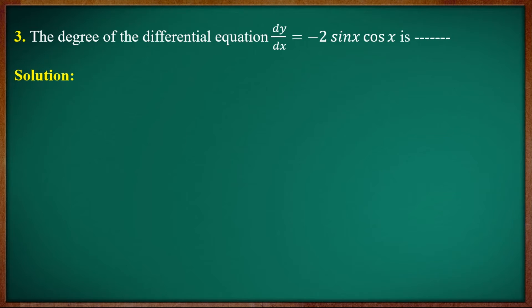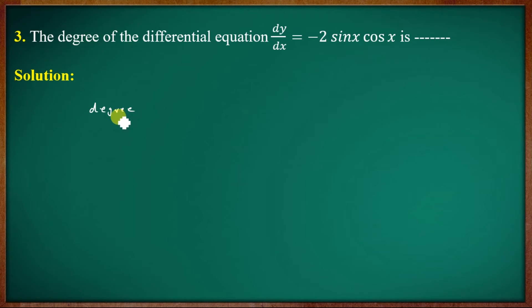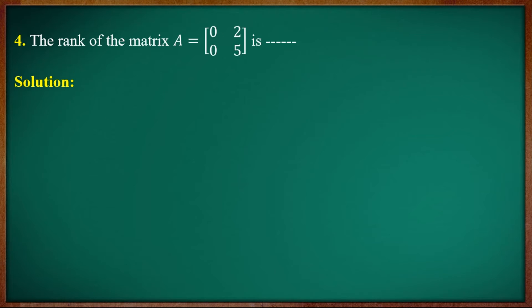Third question: find the degree of the differential equation dy/dx = -2sin(cos x). Here dy/dx is a polynomial function. The degree of dy/dx is 1, so the degree of this differential equation is 1.